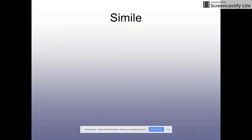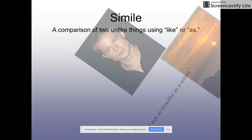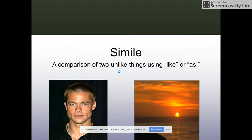The two types I want to talk about specifically with this story are similes. A simile is a comparison of two unlike things using 'like' or 'as.' So for example, 'he was as beautiful as the sunset.' Now we know what this guy looks like — he's a good-looking guy.